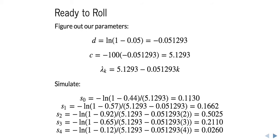And this 0.1130 can be thought of as the time that it takes to observe the zeroth event. And then 0.1662 is the time that it takes to observe the next event and so on.